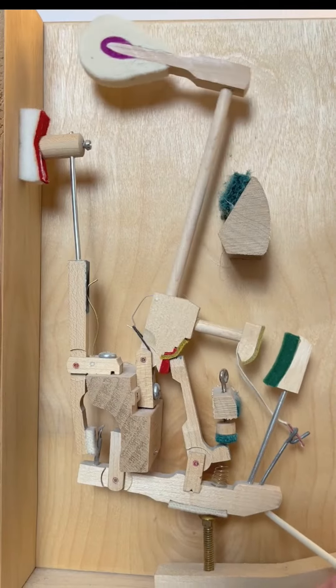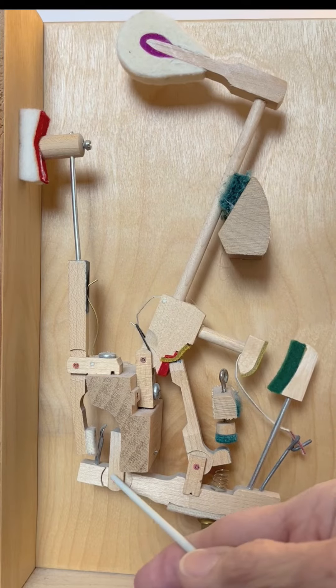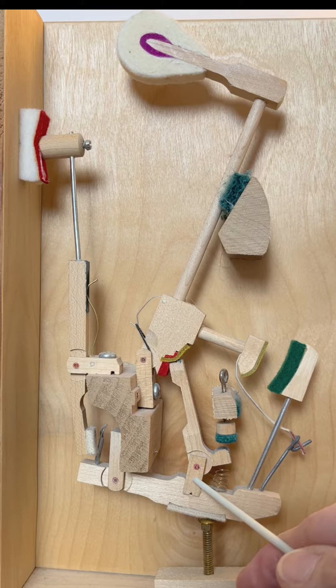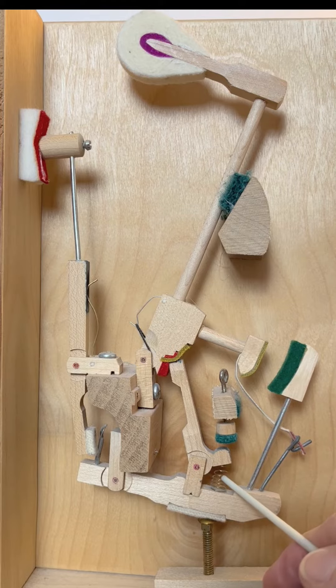This is the capstan. This is the whippen, which goes up and down. This is the whippen flange. This is the jack. This is the jack flange. This is the jack spring.